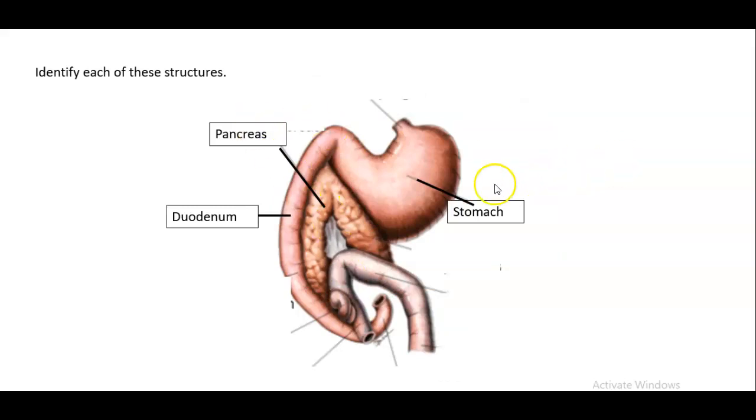Identify each of these structures. We have the stomach, we have the pancreas, which kind of sits within the first fold between the stomach and the duodenum, and then we have the duodenum.